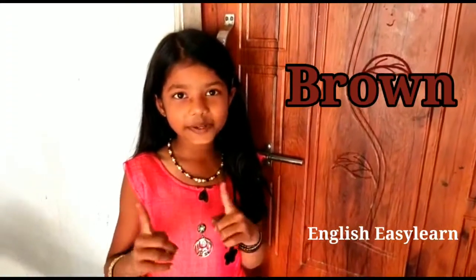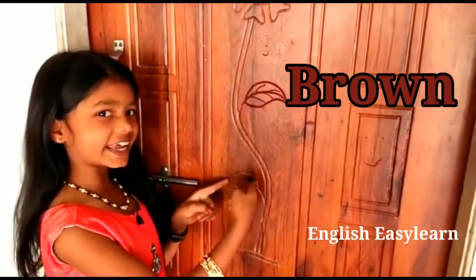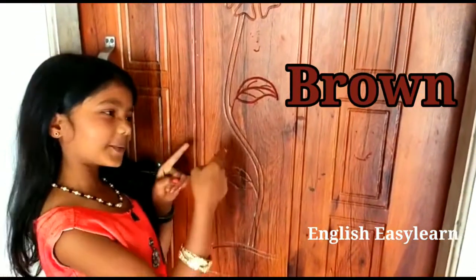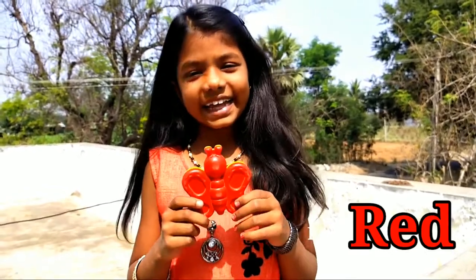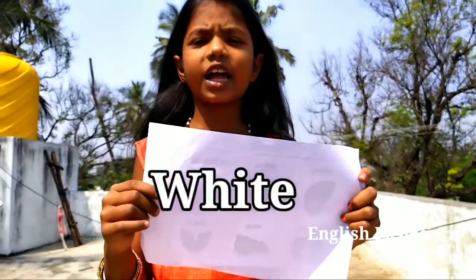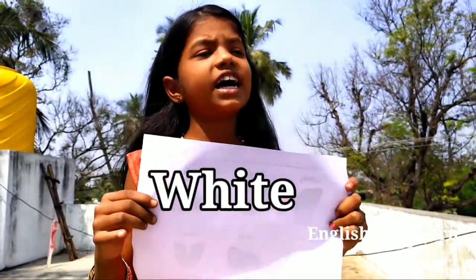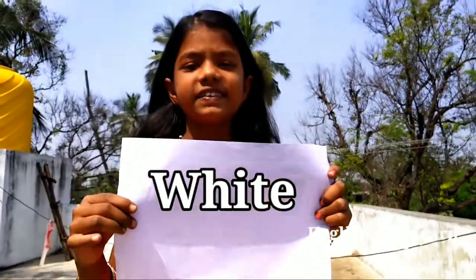This is orange color. Pura rang — brown color. Yaha pura rang hai. This is brown color. Lal rang — red color. Yaha lal rang hai. This is red color. Safeed rang — white color. Yaha safeed rang hai. This is white color.